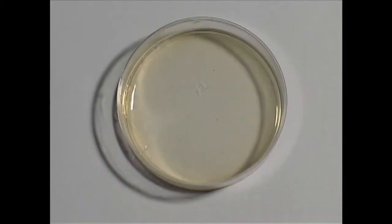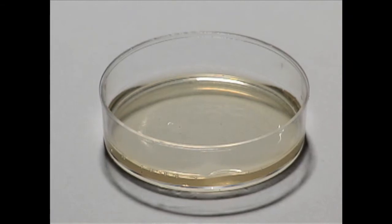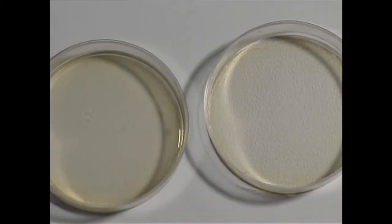Control-2 also lacked the PUC8 plasmid. Its agar was infused with IPTG and X-gal, and also the antibacterial agent ampicillin. The ampicillin should have killed all these cells, resulting in no growth. If any growth has occurred, it will have been from cells that are naturally resistant to ampicillin. They should be few and white.